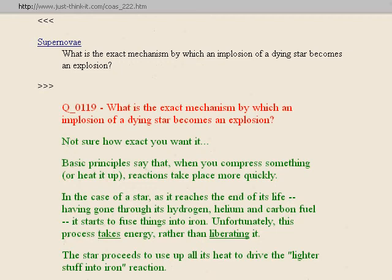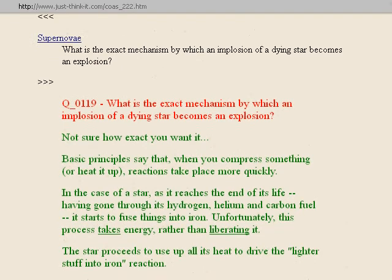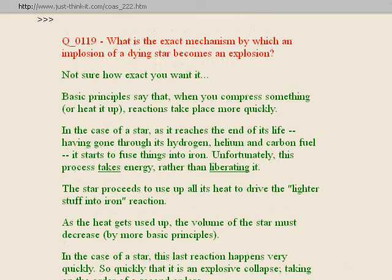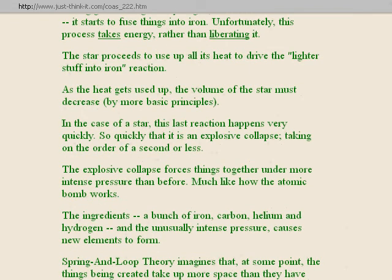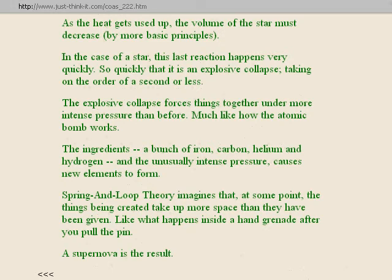Next section: supernovae. Question one hundred and nineteen: what is the exact mechanism by which an implosion of a dying star becomes an explosion? When you compress something or heat it up, reactions take place more quickly. As a star reaches the end of its life, having gone through its hydrogen, helium, and carbon fuel, it starts to fuse things into iron. Unfortunately this process takes energy rather than liberating it. The star uses up all its heat to drive the lighter stuff into iron reaction. As heat gets used up, the star's volume must decrease. This last reaction happens very quickly — about a second — so it is an explosive collapse. Explosive collapse forces things together under more intense pressure, much like how the atomic bomb works. At some point the things being created take up more space than they have been given, like what happens inside a hand grenade after you pull the pin. A supernova is the result.